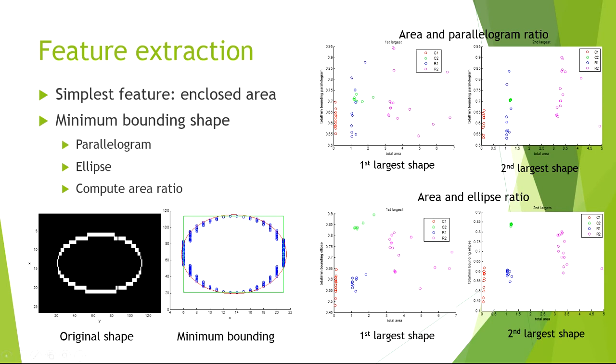The enclosed area is this one. Also, it is intuitive to think that if the original shape is an ellipse, then the area ratio of the minimum bounding ellipse and the area itself should be close to one. The same goes for a parallelogram or rectangle. This is done by using the concept of a convex hull.